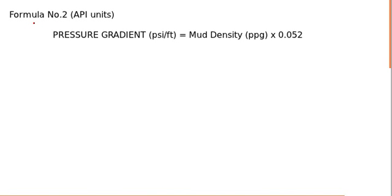IWCF well control formula number 2 in API units. This formula is used to find pressure gradient if you know mud density. The formula is: pressure gradient equals mud density multiplied by the constant factor 0.052.